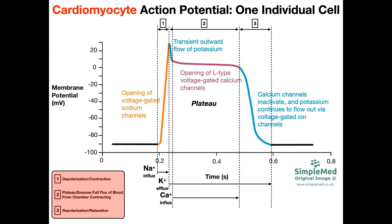In the previous set of videos, we talked about the electrical conduction system of the heart and the pacemaker potential, which is the specific action potential of those cardiac conduction cells, particularly the sinoatrial node. We have two separate action potentials and we need to make sure to distinguish them from one another. That first one was the pacemaker potential — the action potential for the electrical cells of the heart.